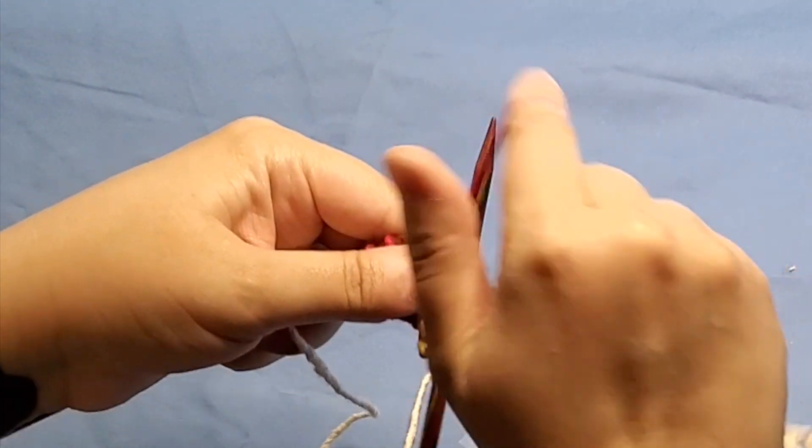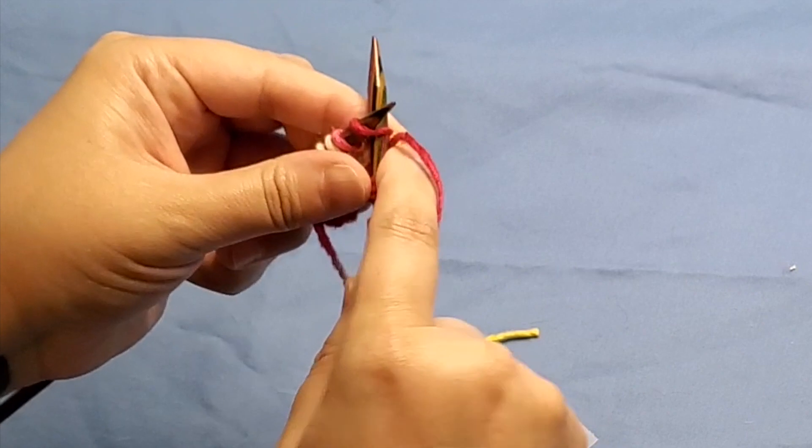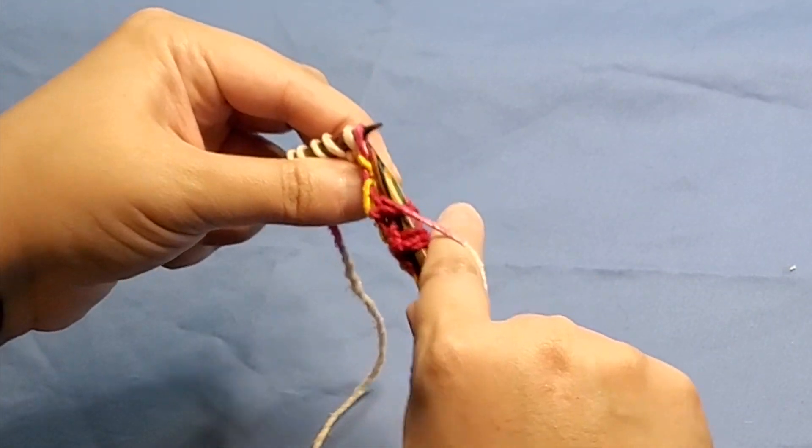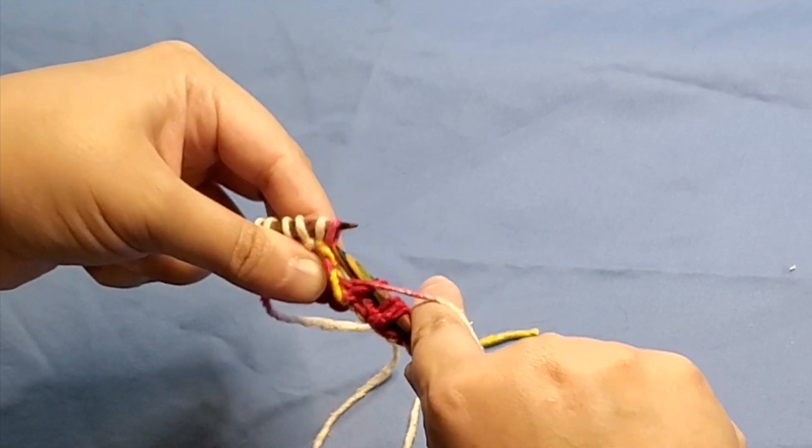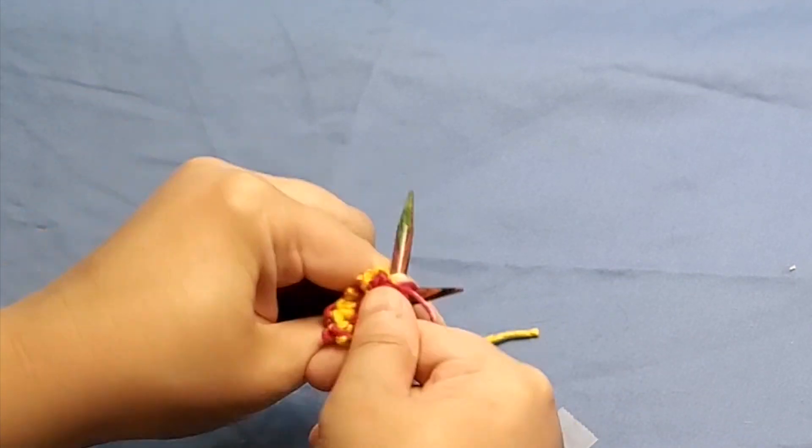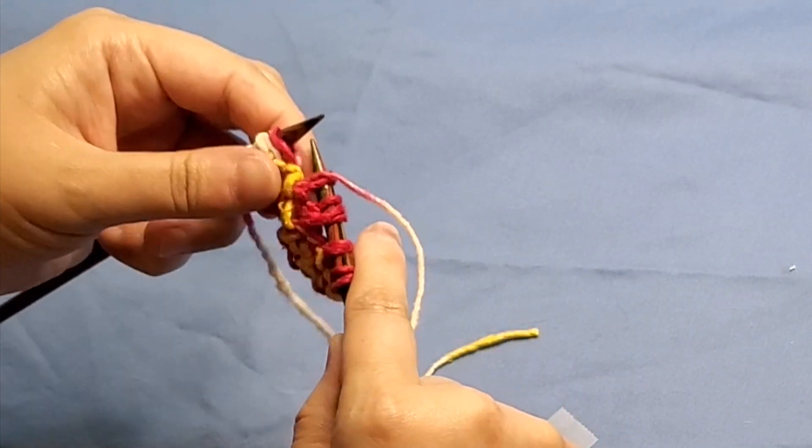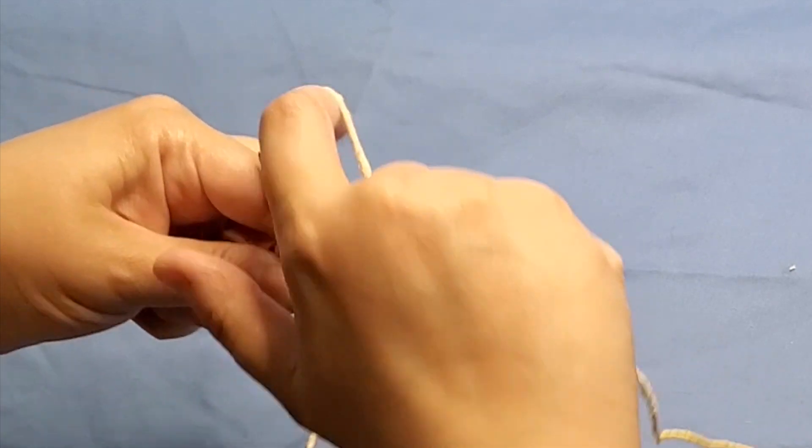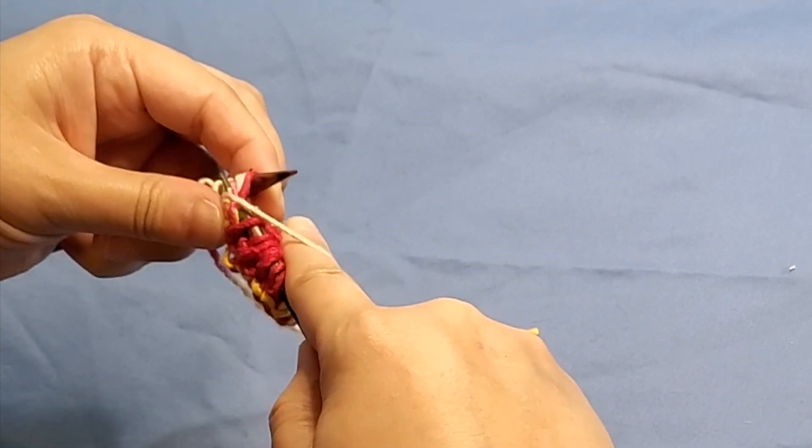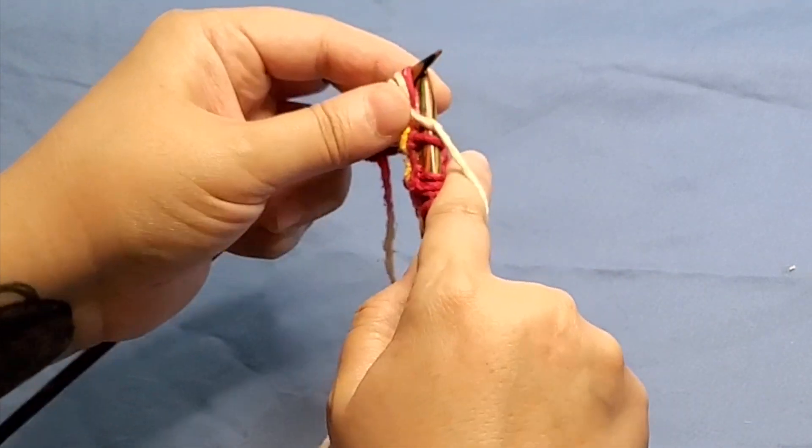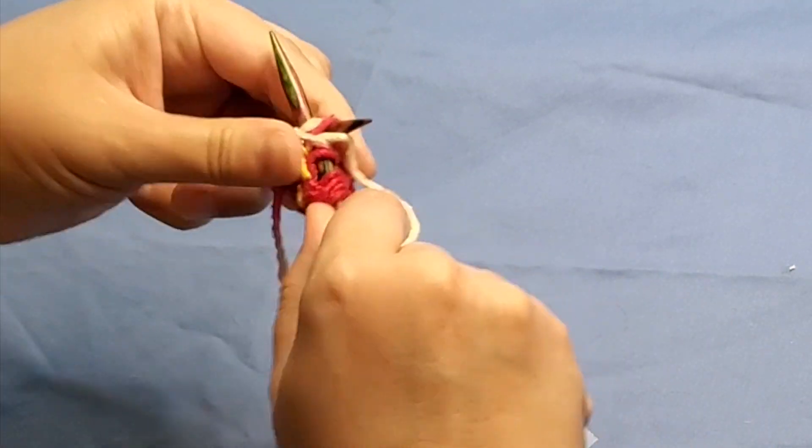And then knit one. Then you've got another daisy stitch, which is one, two, three. Oops. Like I said, daisy stitch can get a little fiddly. So you're going to purl those three together. Yarn over and then purl the three together again.